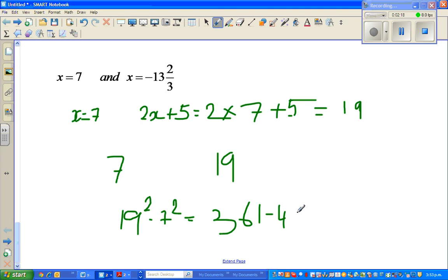19 squared gives you 361 minus 49, and that is 312. I'll show this also on a graphic calculator. 312. So 19 squared minus 7 squared. Remember that.